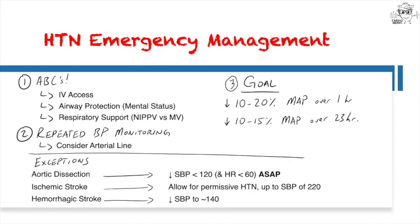Exceptions include aortic dissection, for which you need to decrease the systolic below 120 and heart rate below 60 as soon as possible, as well as ischemic stroke, for which you allow permissive hypertension up to a systolic blood pressure of 220 — or 185 if you are choosing to use TPA — and hemorrhagic stroke, for which you decrease the blood pressure to between 140 to 160. In pulmonary edema, you would decrease the blood pressure to a similar level until the patient is able to breathe more easily.